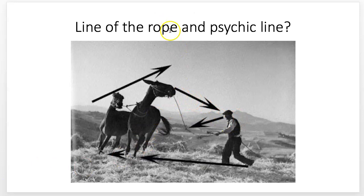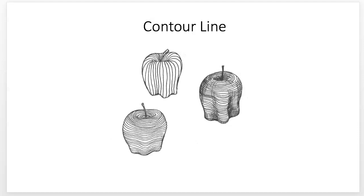Is there a psychic line here? Yes — the horse is looking at the man, the man is looking at the rib, his feet are moving toward the horse, and the horse is moving toward him. Psychic line can get complex, but it usually involves a clear direction being pointed to.